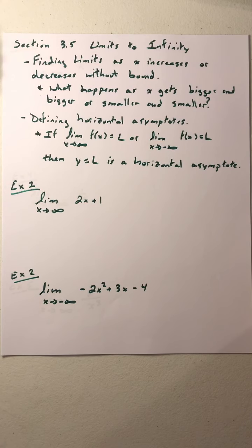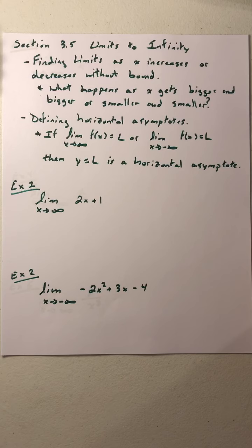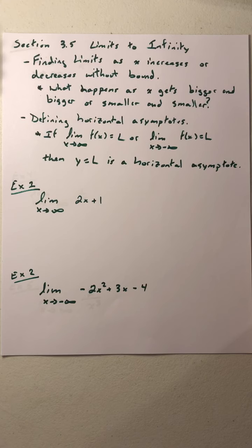We've got quite a few examples to run through today. A lot of things can happen with these. What happens as x gets bigger and bigger? You have to think of infinity as a concept or an idea — it's not necessarily a number. We can't just plug infinity into an equation and get something out. So our first rule of limits, plug and chug, doesn't necessarily work with infinity. We have to think about what happens with our function as x grows larger and larger or smaller and smaller.